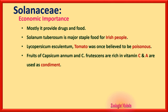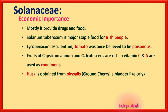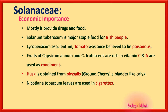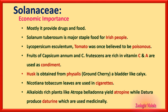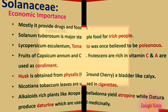Fruits of Capsicum annuum and Capsicum frutescens are rich in vitamins C and A and are used as condiment — condiment means they add flavor to food. Husk is obtained from Physalis (ground cherry), which has a bladder-like calyx — that bladder-like calyx is a unique feature. Nicotiana tabacum: leaves are used in cigarettes — that is tobacco. Alkaloid-rich plants like Atropa belladonna yield atropine, while Datura produces daturine; both are used medicinally.